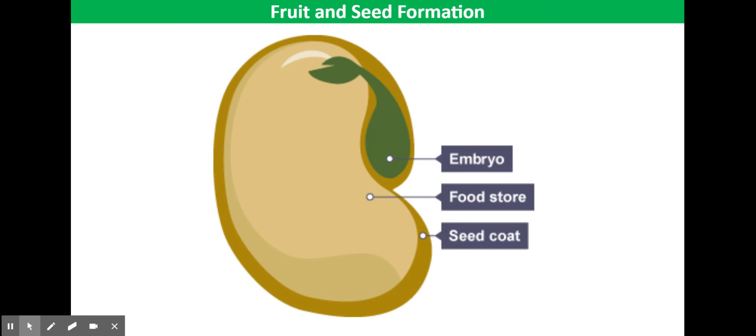A seed has three main parts: the embryo, the food store, and the seed coat.